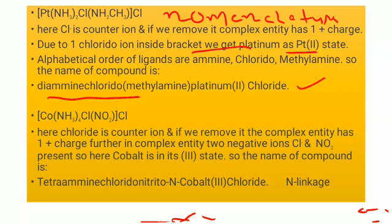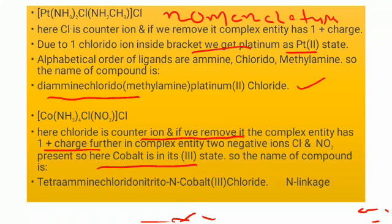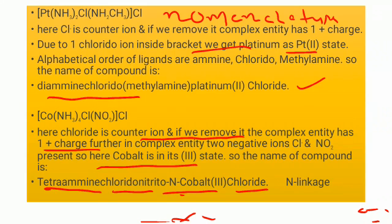The second naming example is [Co(NH₃)₄Cl(NO₂)]Cl. Here chloride is the counter ion, and if you remove it, the complex entity has one positive charge. Further, in the complex entity two negative ions, Cl⁻ and NO₂⁻, are present, so cobalt is in its third state. The name of the compound is tetraamine chlorido nitrito-N cobalt(III) chloride. Here 'N' denotes N-linkage, meaning when we write NO₂ it shows N-linkage.